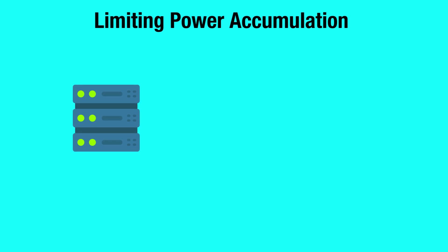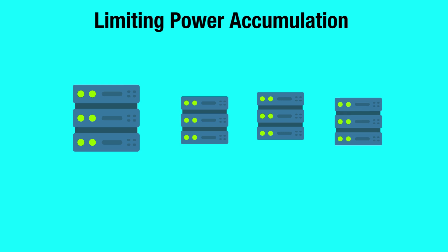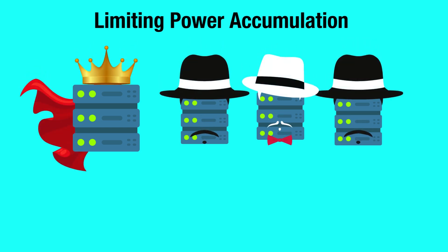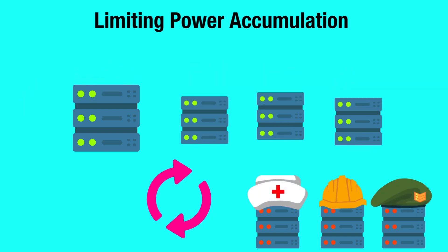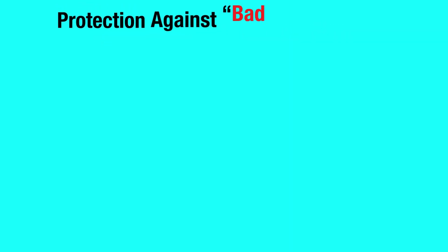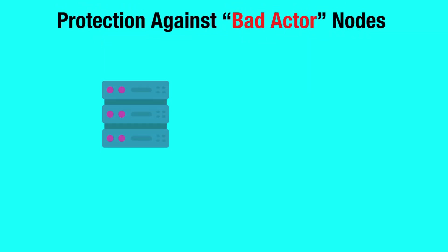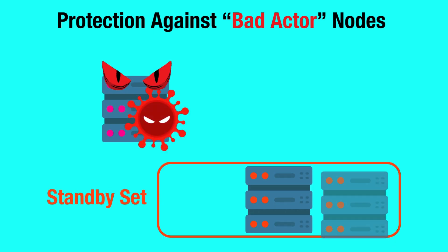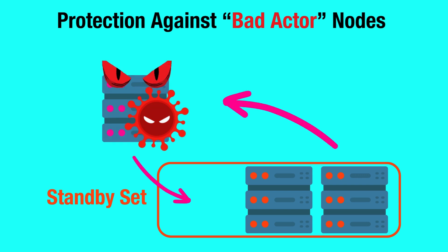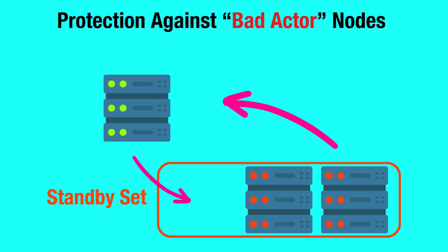Limiting power accumulation: one major concern in decentralized networks is the possibility of a few nodes or a group of nodes accruing significant power or influence over the network's operations. By ensuring that nodes are routinely rotated, no single node or group of nodes can maintain prolonged influence, thus preserving the decentralized essence of the network. Protection against bad actor nodes: in the scenario where a node may be compromised or begins to behave maliciously, the rotation system ensures that such nodes don't remain active indefinitely, curtailing the damage they can do over an extended period.